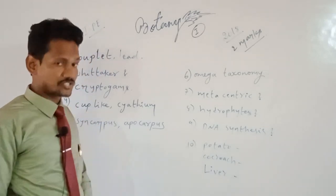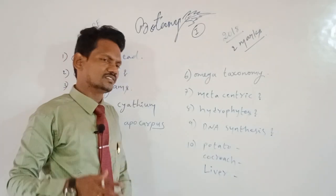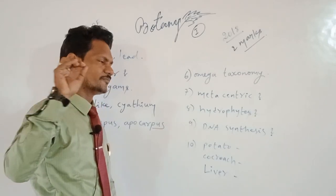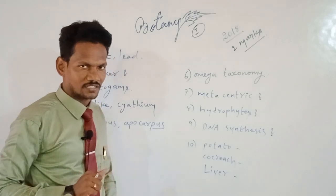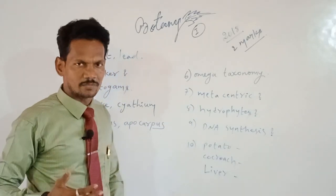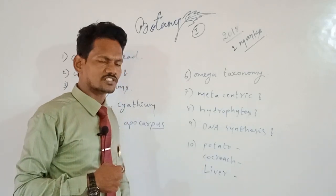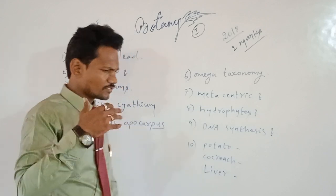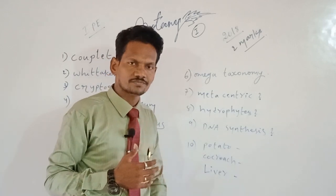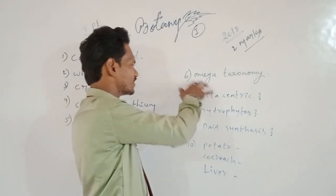Next question: what is meant by omega taxonomy? There are different types of taxonomy — alpha, beta, gamma, omega, and numerical taxonomy. Omega taxonomy is highly advanced taxonomy in which different types of advanced branches are used, such as cytology, phytochemistry, embryology, physiology, and serology. This is why it is called highly advanced taxonomy.